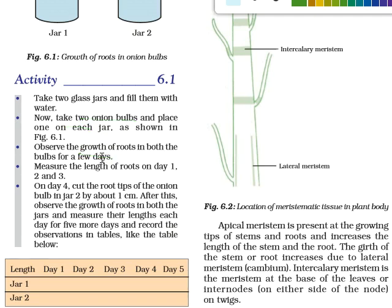We need to observe the growth of roots — keep observing them for a few days: day one, day two, day three — recording the root length for jar one and jar two each day. Then on day four, cut the root tips of the onion bulb in jar two by about one centimeter.